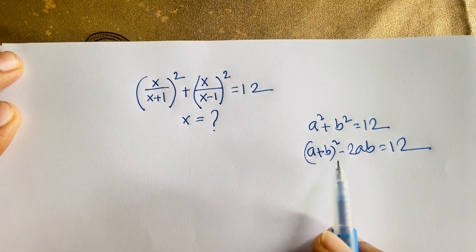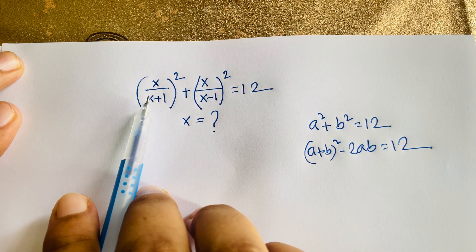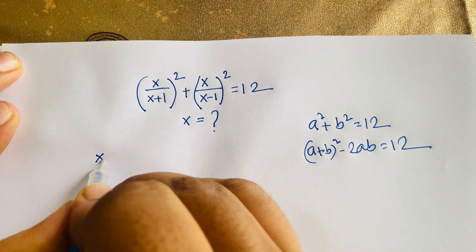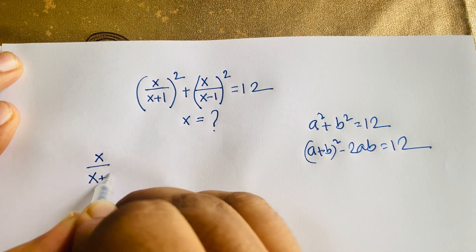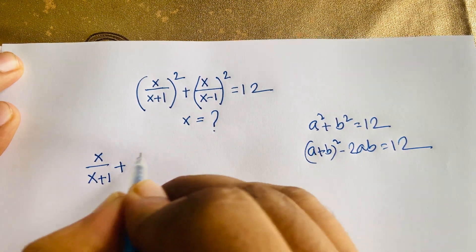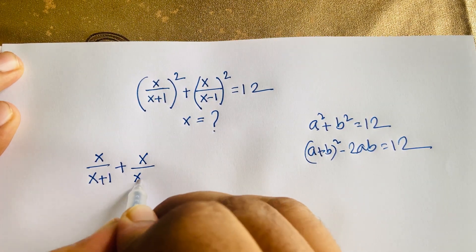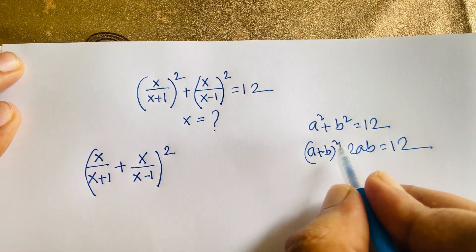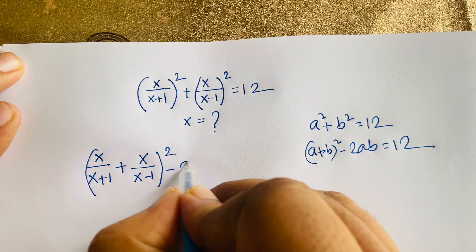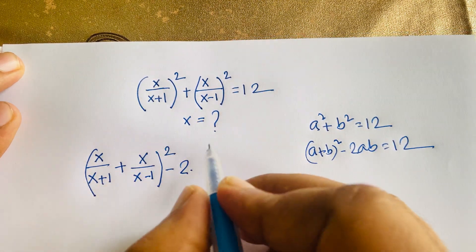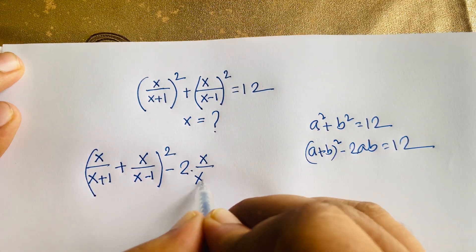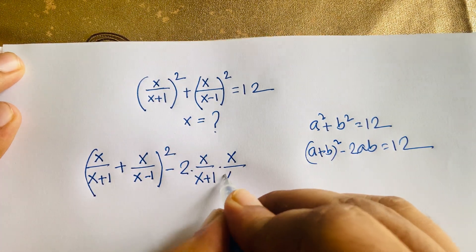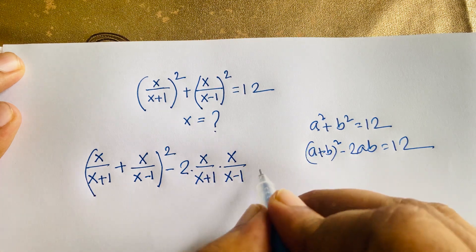Now applying this identity, with a = x/(x+1) and b = x/(x-1), we get: x/(x+1) plus x/(x-1), whole squared, minus 2 times x/(x+1) times x/(x-1), is equal to 12.